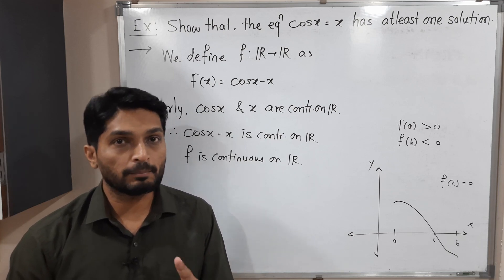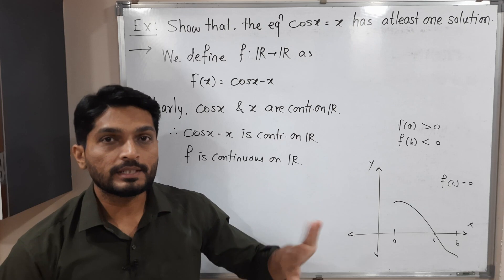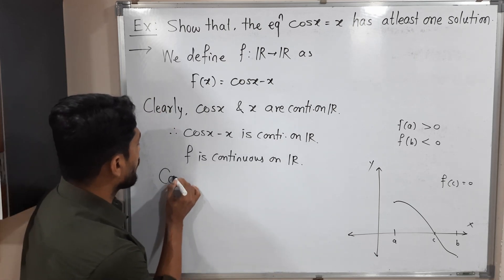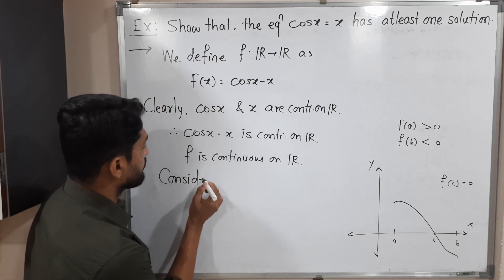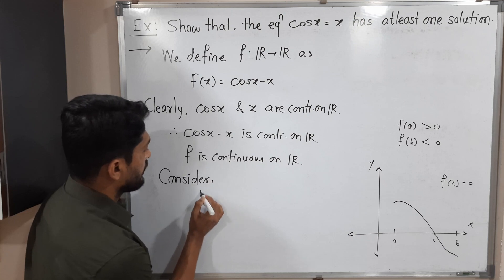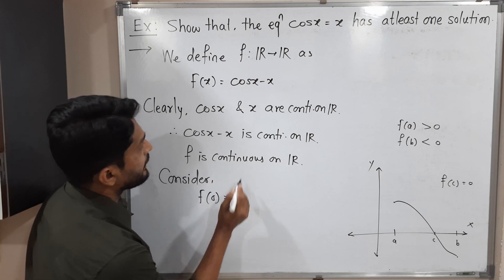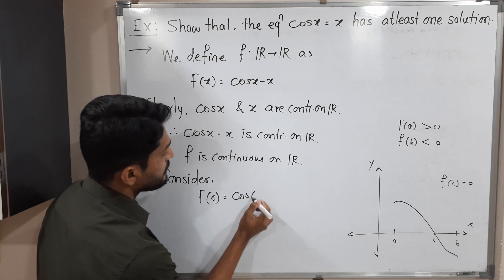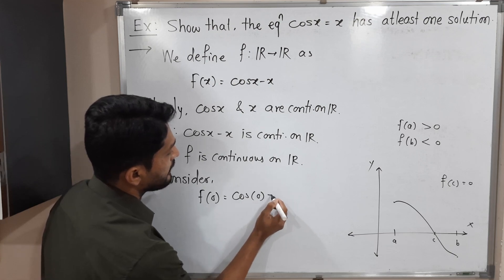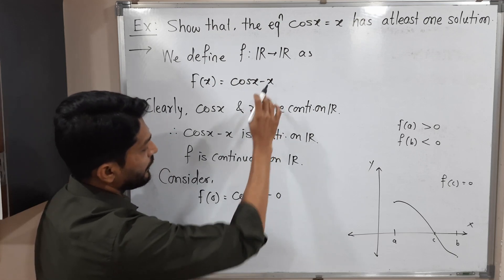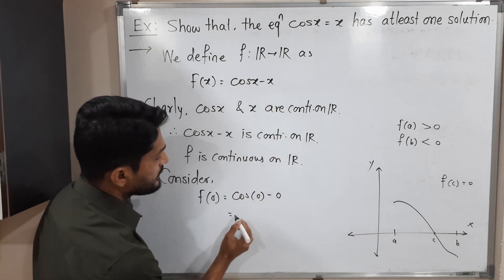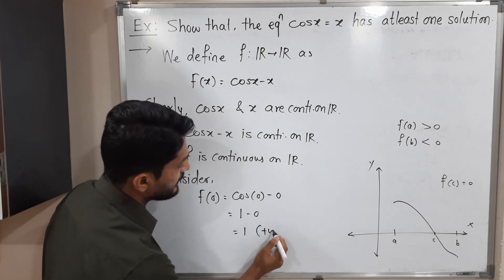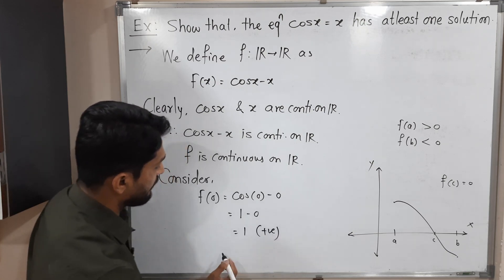Now let us find points a and b that give opposite signs. Let's compute f(0): putting x = 0 gives cos(0) − 0 = 1 − 0 = 1. That means f(0) is giving a positive value.